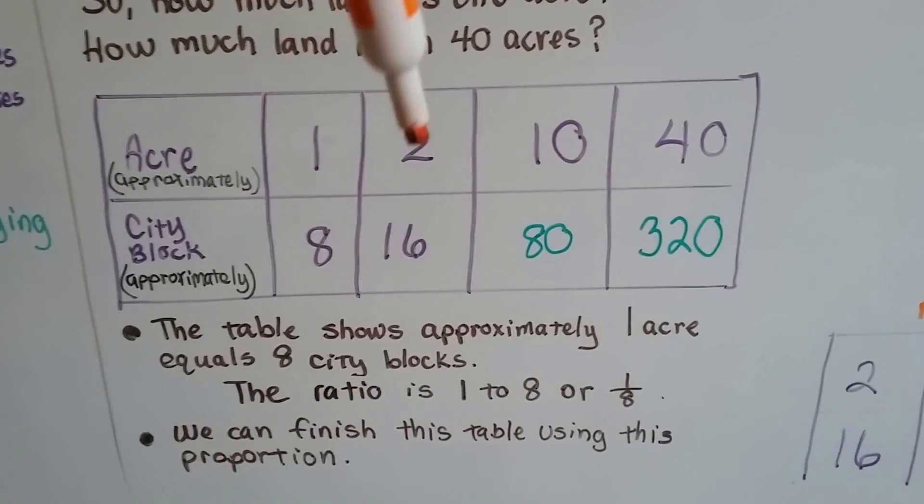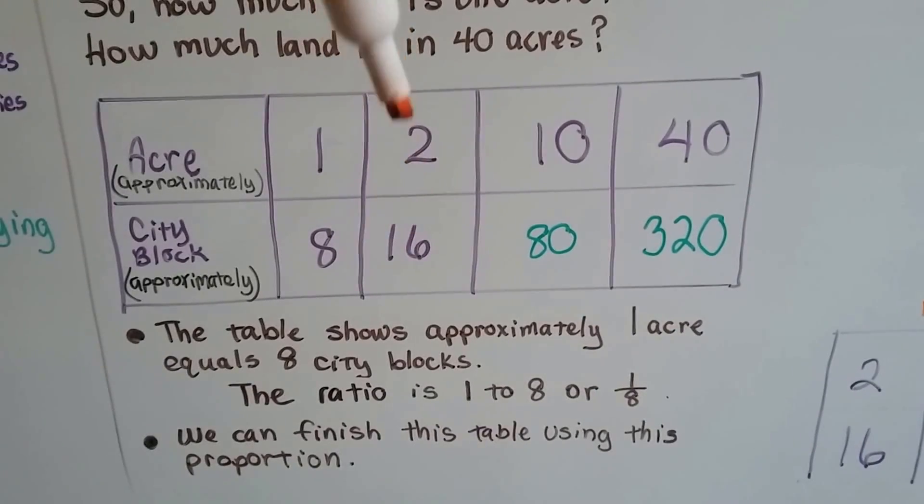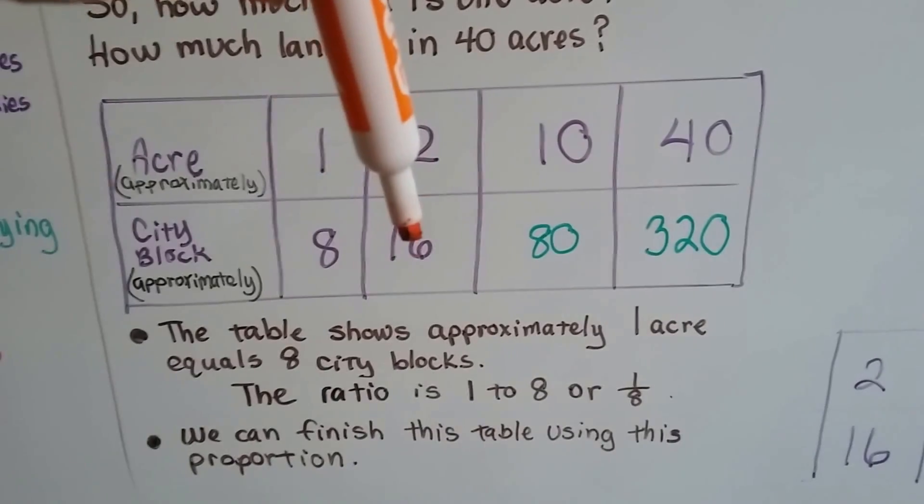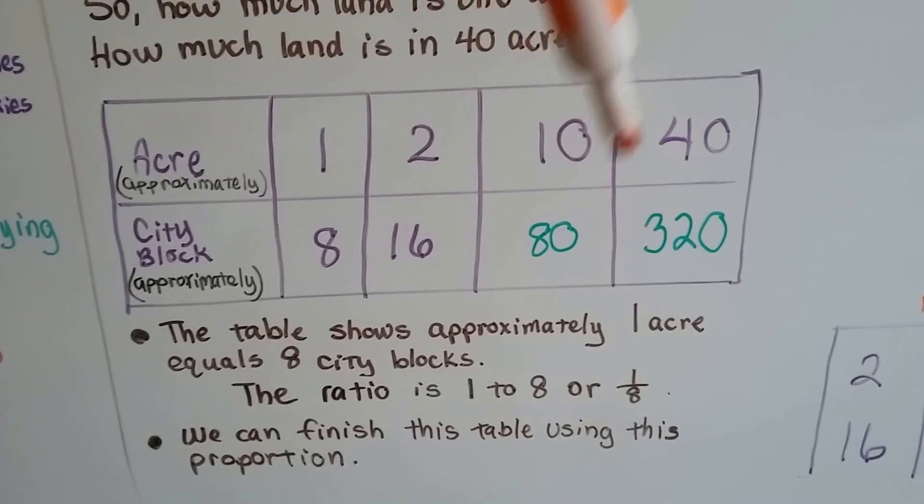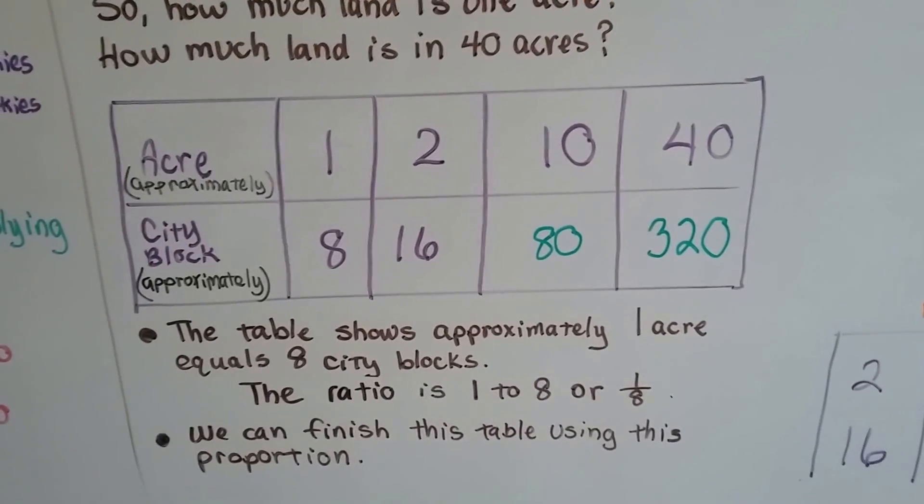If 1 is to 8, then 2 is to 16. We're just multiplying the 2 times 8. 1 times 8 is 8. 2 times 8 is 16. 10 times 8 is 80. 40 times 8 is 320.